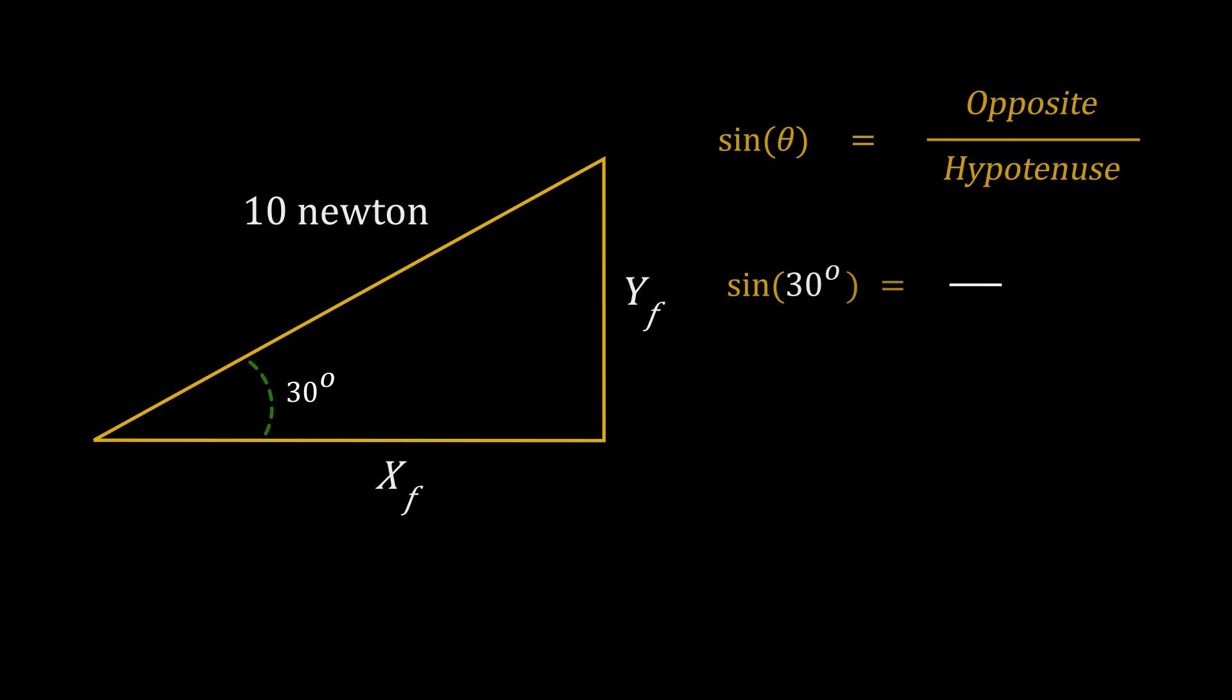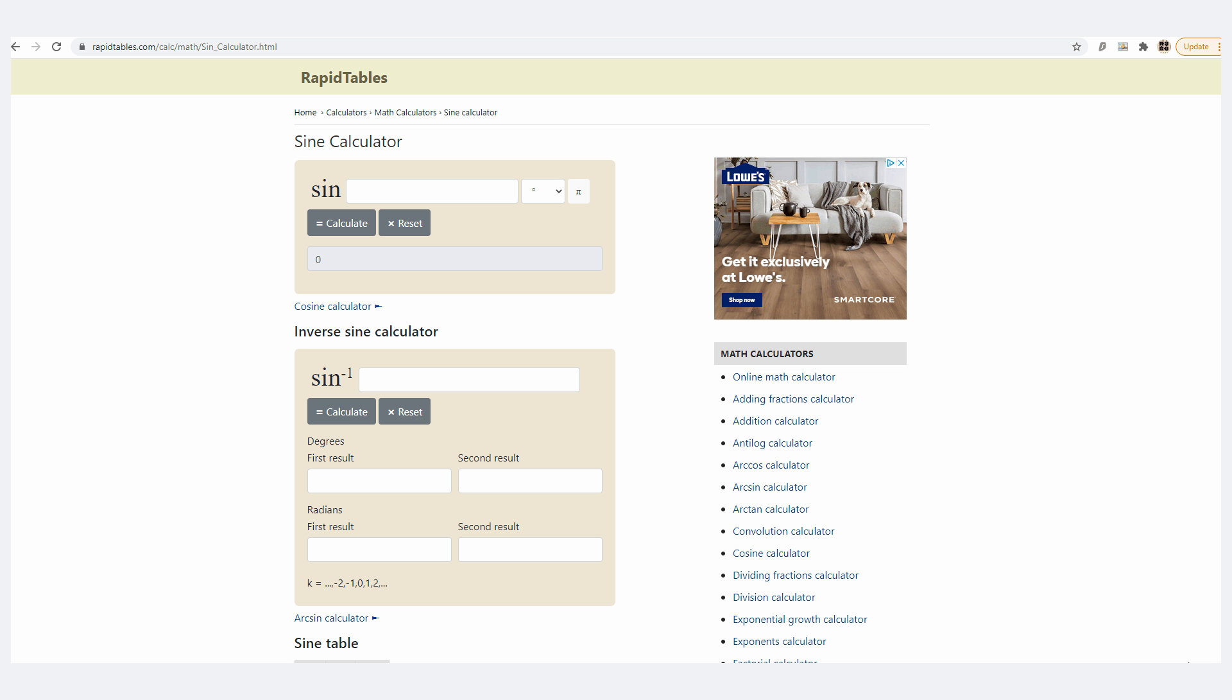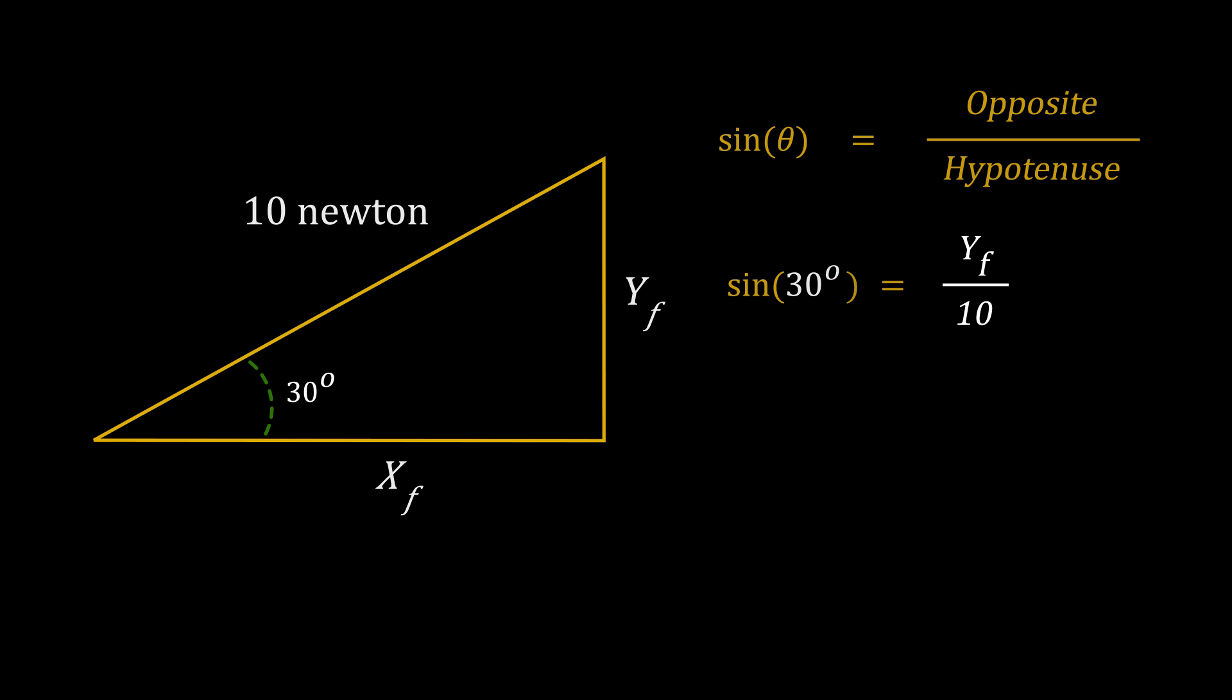That's the equation. And again, if you do sine 30, it's a fixed mapping. Sine 30 is always 0.5. Since the Big Bang, since the universe existed, sine 30 has always been 0.5, my friend. If you don't believe me, again go to this website. Try it out. You will see sine 30 is 0.5.